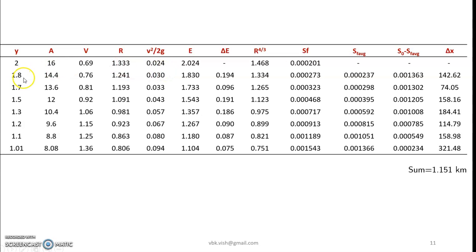So for y equals to 1.8 we calculate area and velocity, v squared by 2g. V squared by 2g plus y would be the value of specific energy. 2.024 minus 1.830 is delta e. Now r to the power 4 by 3, Sf is calculated. Sf average is average of these two values. And we deduct it from the values of S0. And later delta x is calculated.